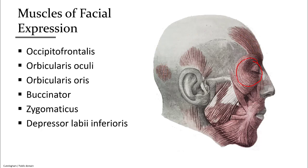Orbicularis oculi is around your eyes, while orbicularis oris goes around your mouth. The buccinator is a muscle deep inside that helps hollow out your cheeks as well as move food around while eating. Zygomaticus is a muscle coming from the zygomatic bone to the corners of your mouth — it helps you smile.